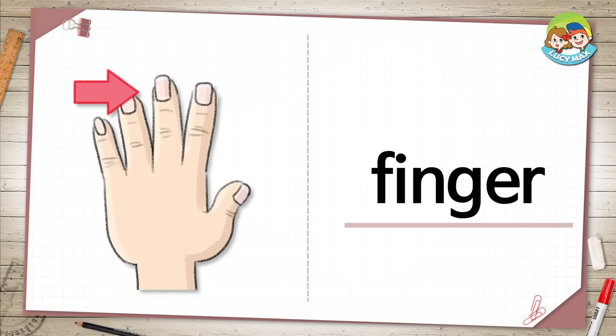Finger. In the picture, you see an arrow pointing to a finger. It is on the hand. We use our fingers to pick up things. How many fingers do you have?